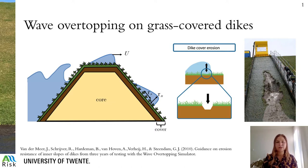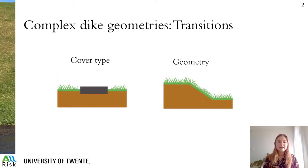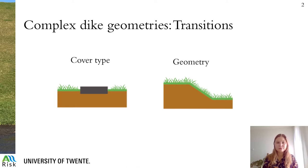These forces can lead to dike cover erosion, as schematized in the figure. An example of a field test in the Netherlands of dike cover erosion can be seen in the figure to the right. In this study we look at complex dike geometries, which we define as a dike that contains multiple transitions. We distinguish two types of transitions: transitions in cover type and transitions in geometry.